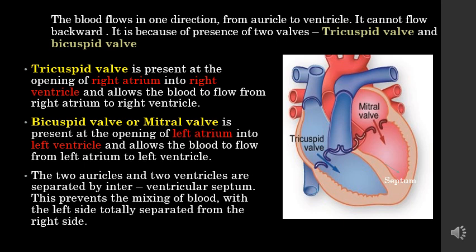This is because of the presence of two valves — the tricuspid valve and the bicuspid valve. The tricuspid valve is present at the opening of the right atrium into the right ventricle, allowing blood to flow from the right atrium to the right ventricle. The bicuspid valve is present at the opening of the left atrium into the left ventricle. The two auricles and two ventricles are separated by the interventricular septum, which prevents the mixing of blood — the left side is totally separated from the right side.